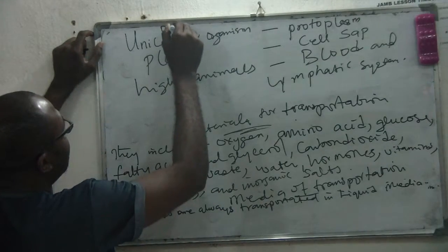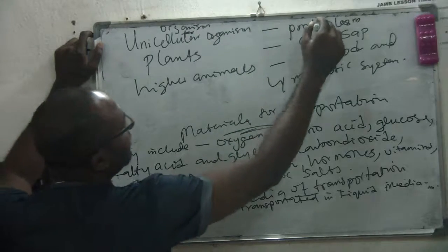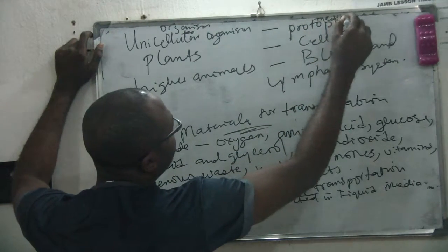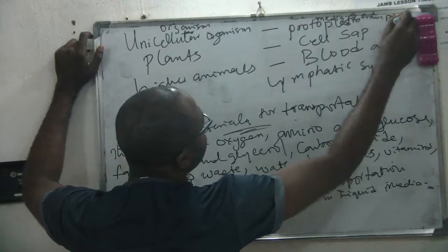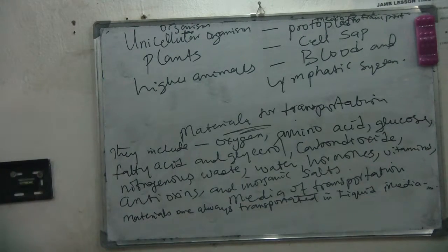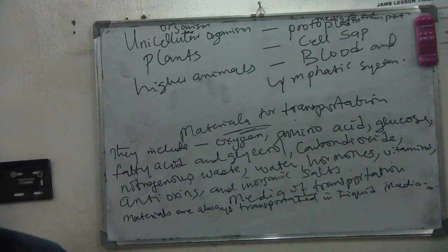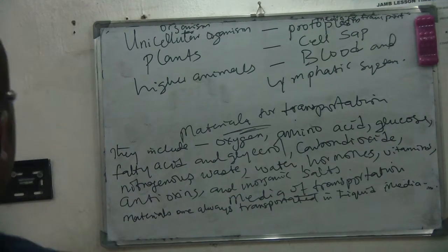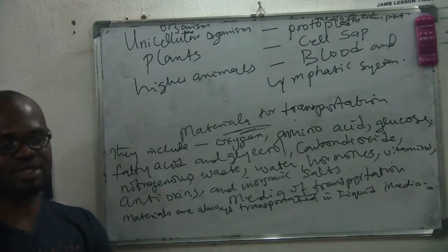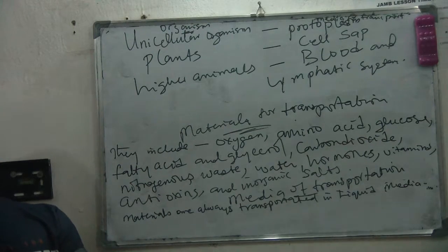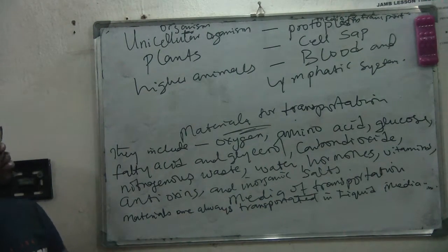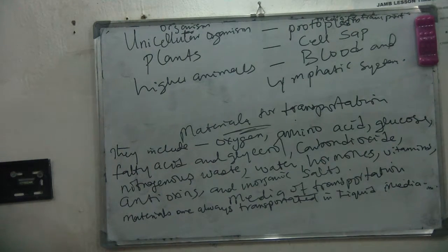So the media of transport: an exam may ask you what is the media of transport for plants - the answer is cell sap, not blood. What is the transport media for unicellular organisms like Euglena and the rest? Protoplasm. What is the transport system for higher animals? Blood and lymphatic system. What are the things being transported? Oxygen, carbon dioxide, and the rest.